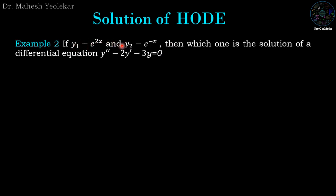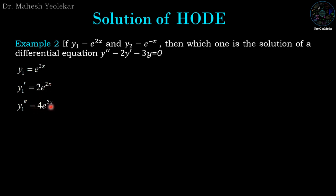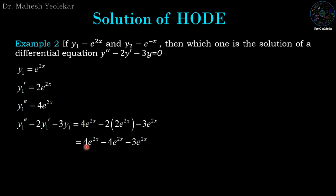Example 2: Given y₁ = e^(2x) and y₂ = e^(-x), check which is a solution of y'' - 2y' - 3y = 0. For y₁: y₁' = 2e^(2x), y₁'' = 4e^(2x). Substituting: 4e^(2x) - 4e^(2x) - 3e^(2x) = -3e^(2x) ≠ 0. Therefore y₁ is not a solution.